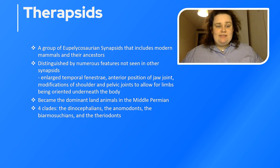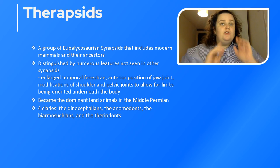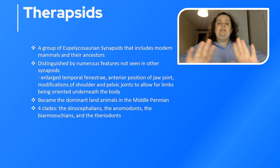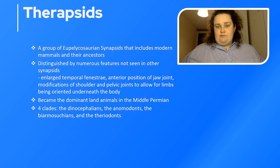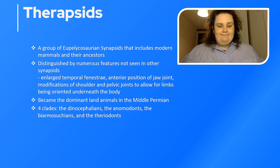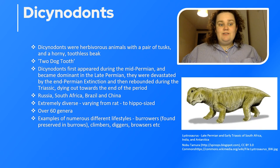Now moving on to the therapsids — a group of eupelycosaurian synapsids which include modern mammals and our ancestors. They are distinguished by numerous features not seen in other synapsids, such as an enlarged temporal fenestra, the anterior position of the jaw joint, and modifications to the shoulder and pelvic joints allowing the limbs to be orientated underneath the body rather than in a sprawling gait. They became the dominant land animals during the middle Permian. There are four clades: the dinocephalians, the anomodonts, the biarmosuchiains, and the theriodonts.